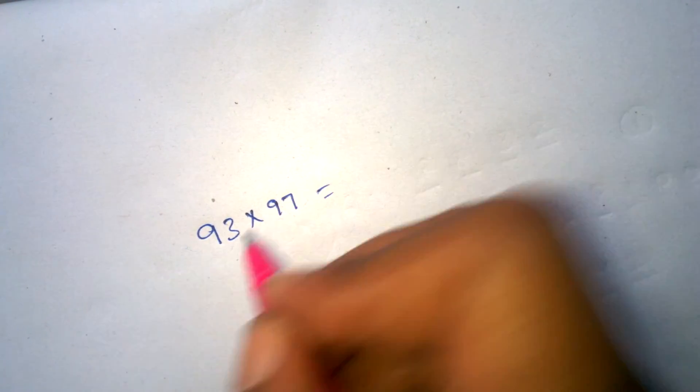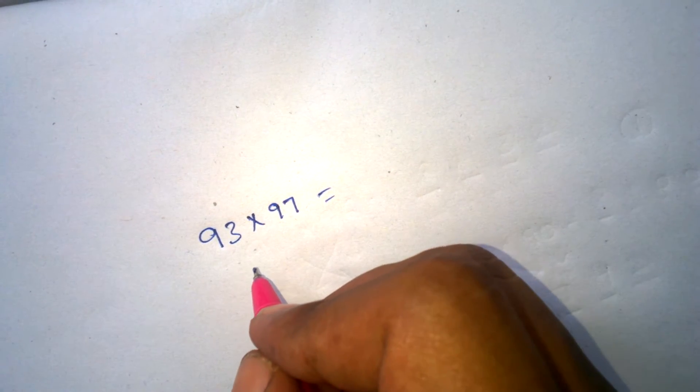Hi friends, it's easy to multiply numbers near 100. For example, something like 93 times 97. This method makes it easy to multiply these numbers.